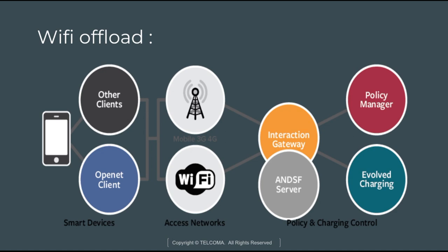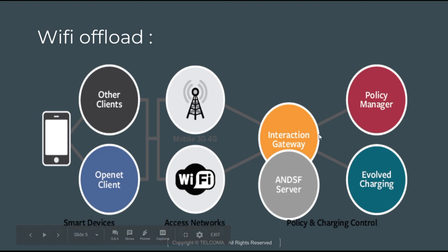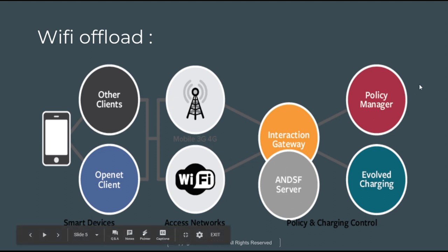We can see here the architecture includes smart devices, an access network, and policy, charging and rules components. We also have other clients over the network client — 3G and 4G mobile and the Wi-Fi network. There is an interaction gateway, an ANDSF server, and policy and evolved charging.